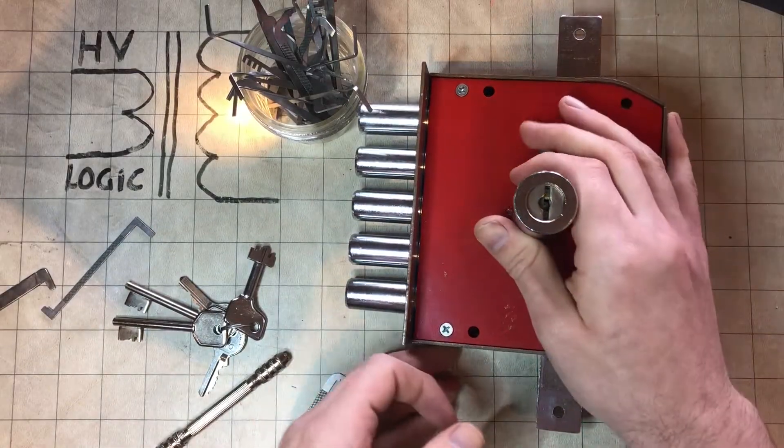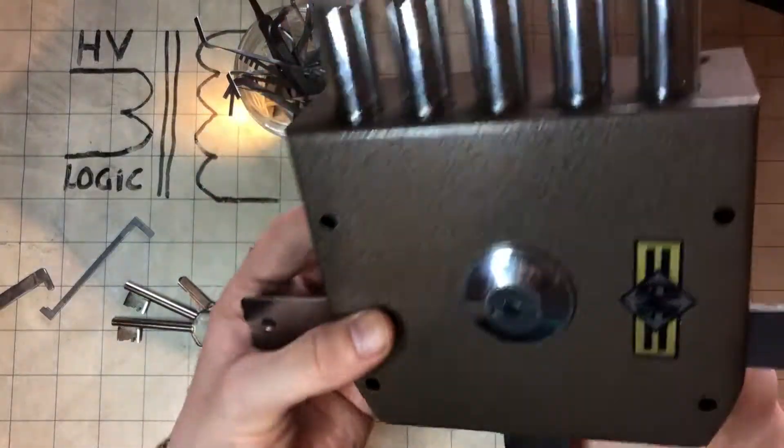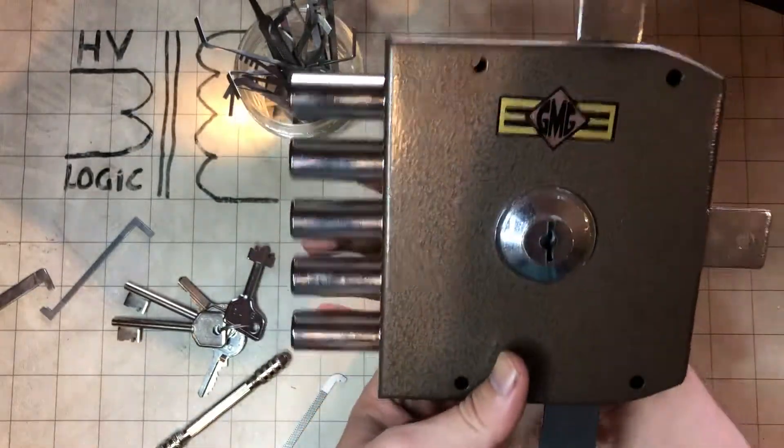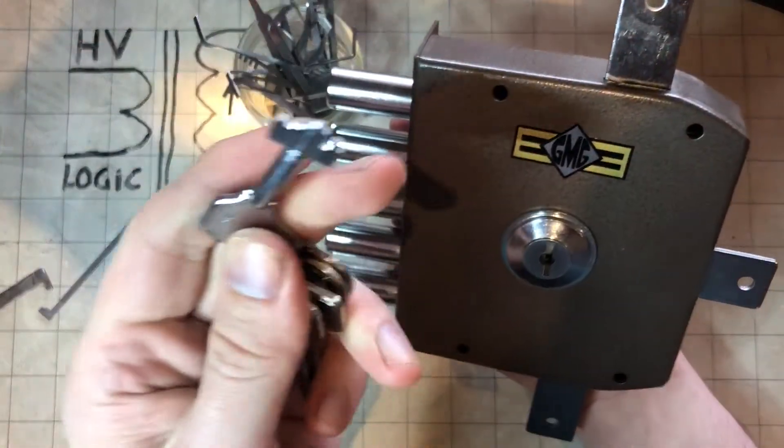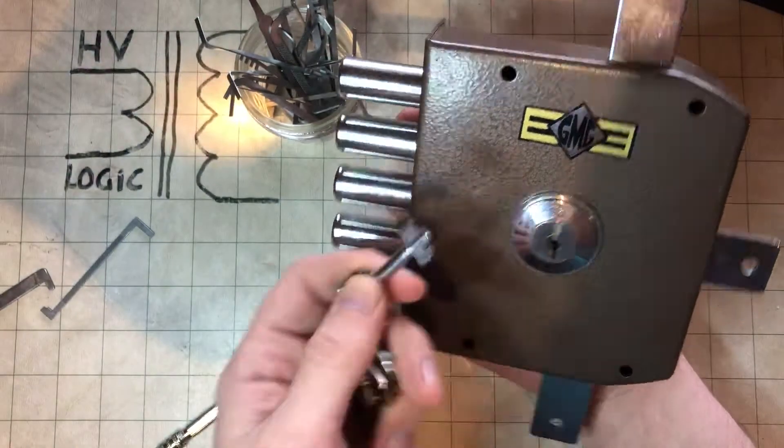All right, I've got this huge GMG lock here. This is the key that came from Down Under Monkey.